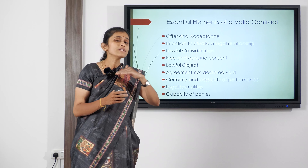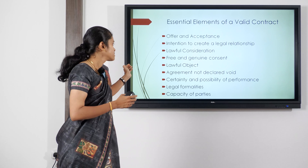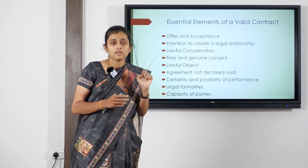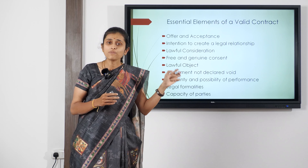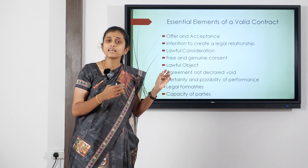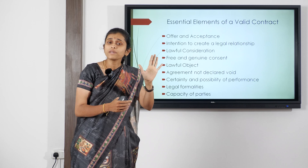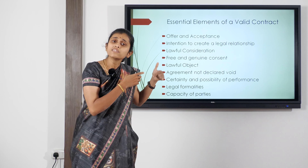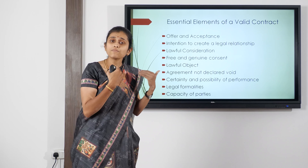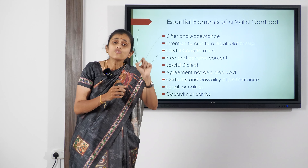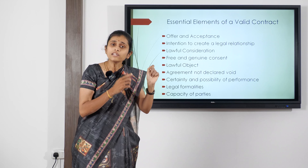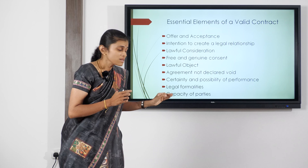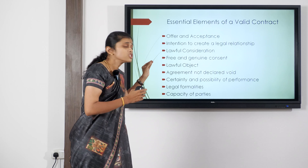Next is certainty and possibility of performance. Any contract should be certain and specific. For example, if I hold five different pens and tell Mr. X I'll sell my pen for 10 rupees, he may assume a different pen than the one I intend. It should be specific — for instance, 'I'm willing to sell this red pen to you for 10 rupees.' It must also be possible to perform.